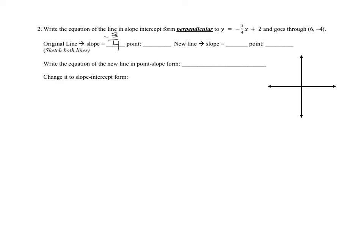The original line goes through the y-intercept (0, 2). The new perpendicular line must have the opposite reciprocal slope: 4/3 — changing the sign and flipping it. The new line goes through (6, negative 4). Sketching the original: y-intercept at 2, slope of negative 3/4, going down 3 and right 4.